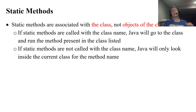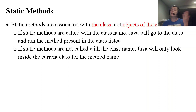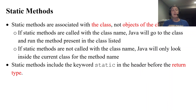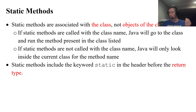If you don't use the dot notation — in other words, if you call on a method but don't list the class name — Java will look inside whatever current class it's in for that method name. These methods can be run without any object present. Static methods include the keyword 'static' in the header before the return type. The only spot we have used it so far is in our main method, because the main method is not associated with an object — it's just the method that runs, so it's static.